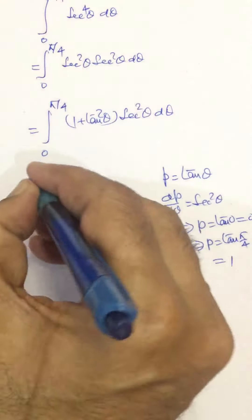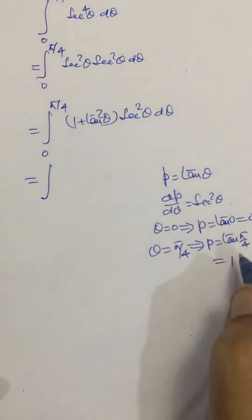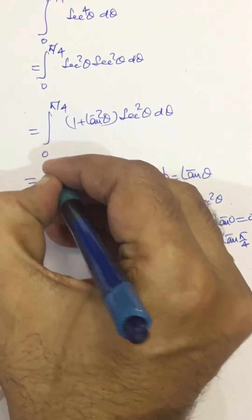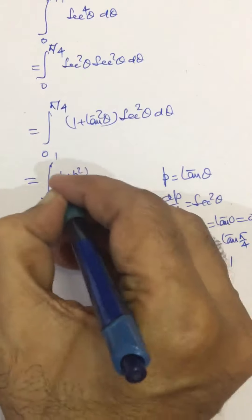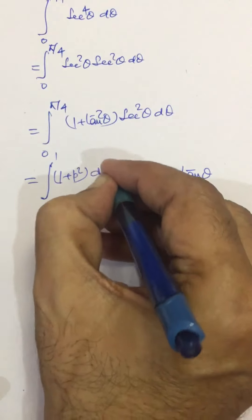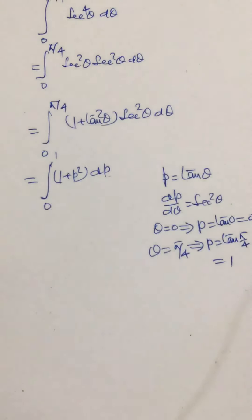So this integral becomes, with limits from 0 to 1 now, and this becomes 1 plus p square dp.